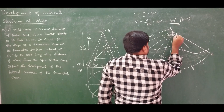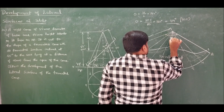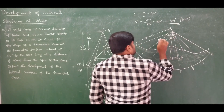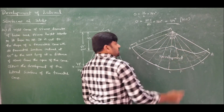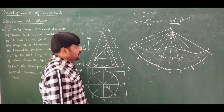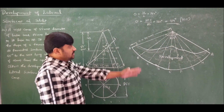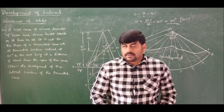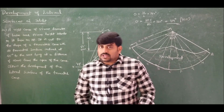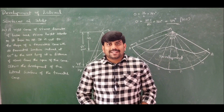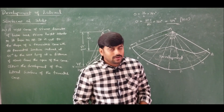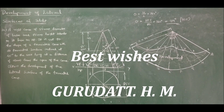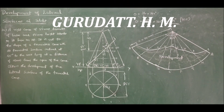This angle is drawn as 124 degrees, with each division measuring 15.5 degrees. This is the required development of the truncated portion of the cone and the complete solution for Problem number 14. That's all from this lecture — thank you.